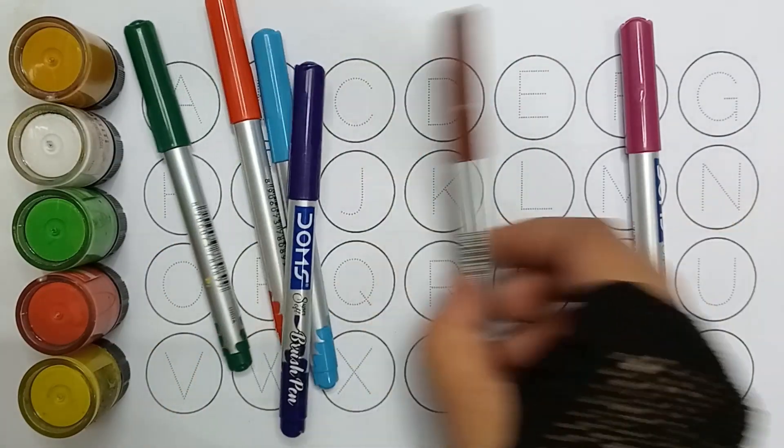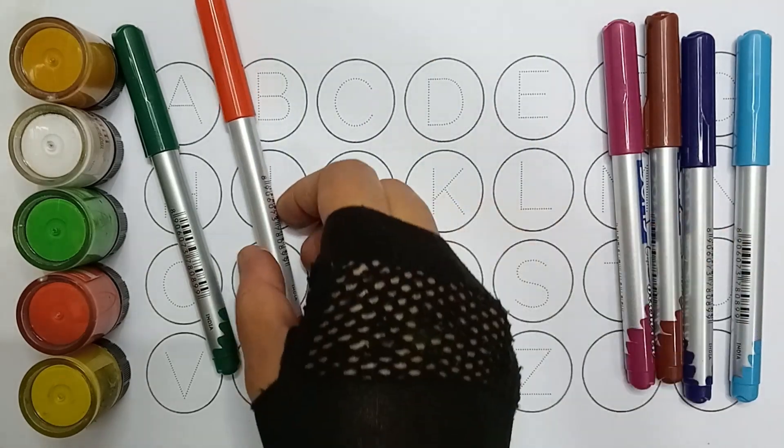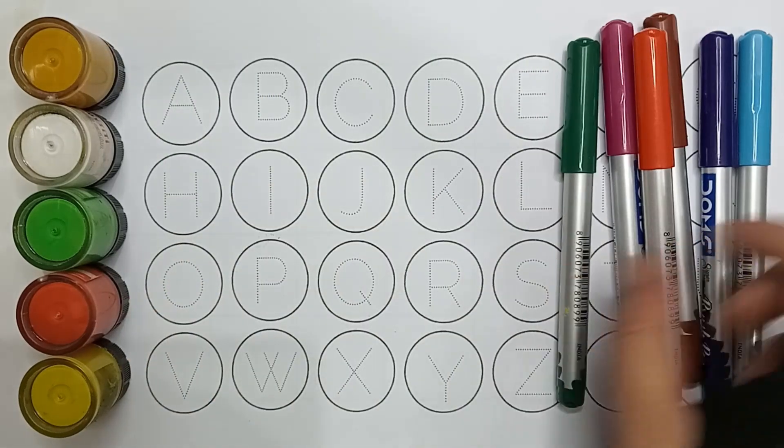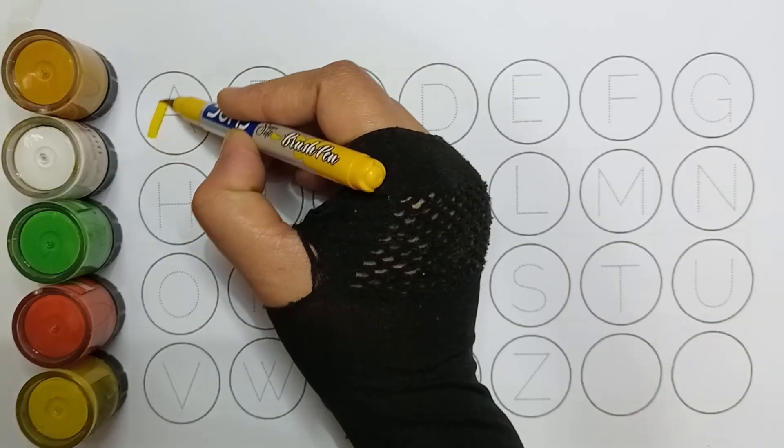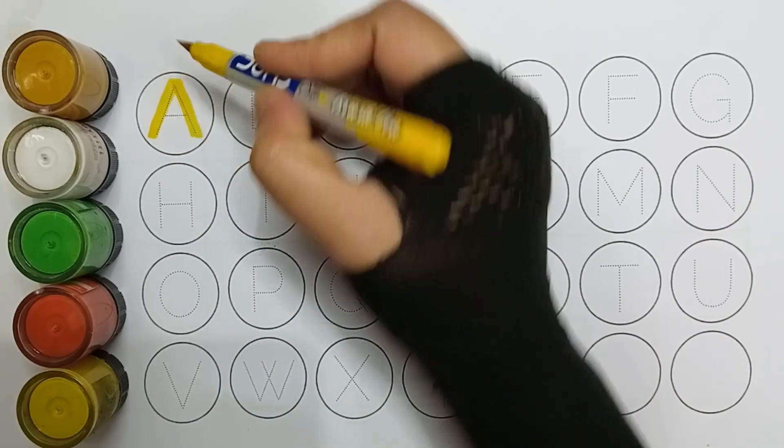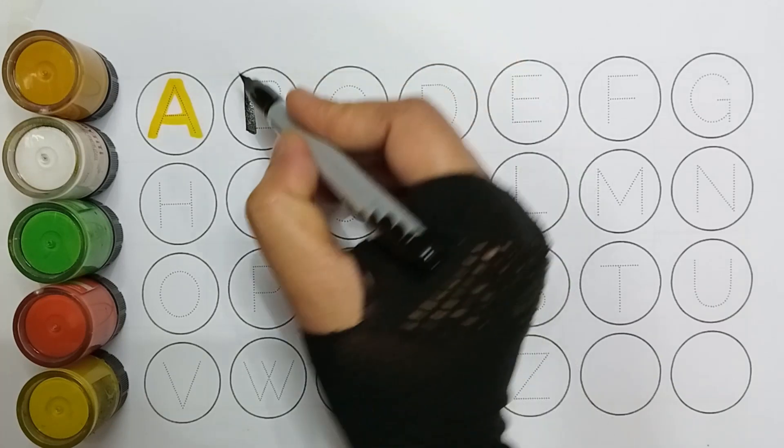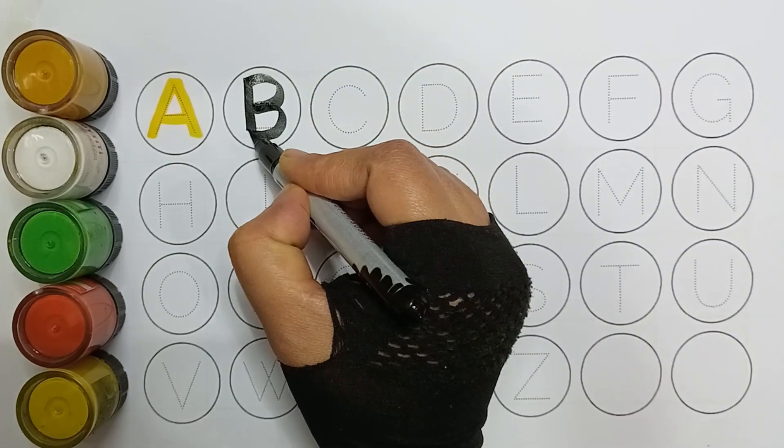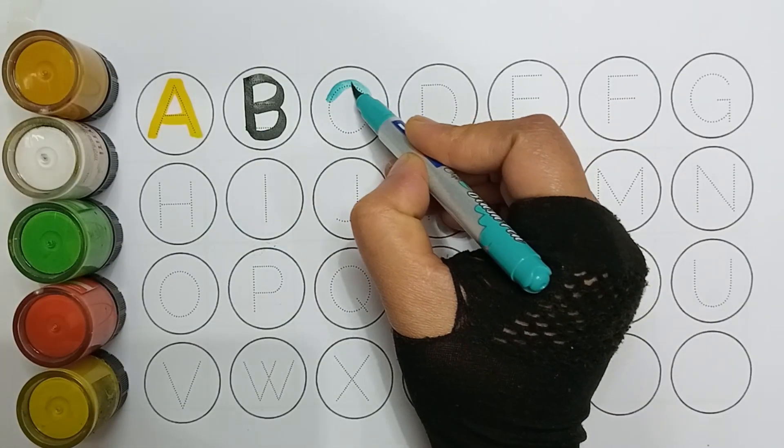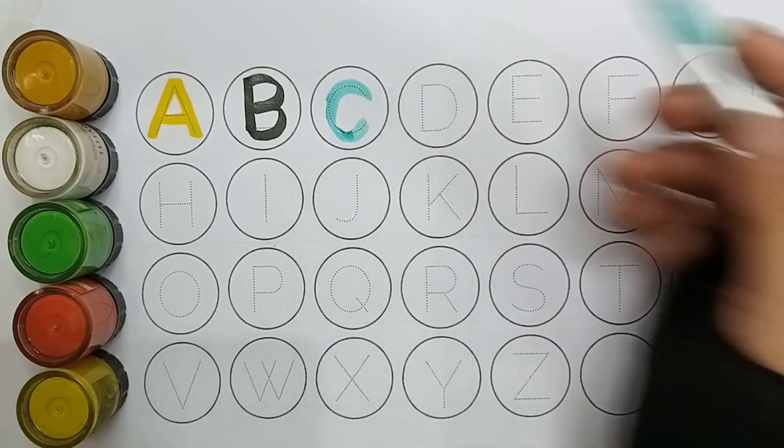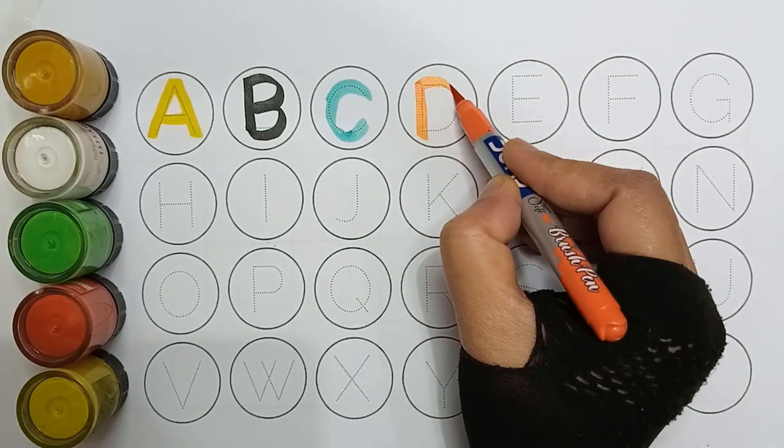Pink color, brown color, purple color, sky blue color, red color, green color, yellow color. A, A for apple, black color. B, B for ball. C, green color, C for cat. Orange color, D, D for doll.